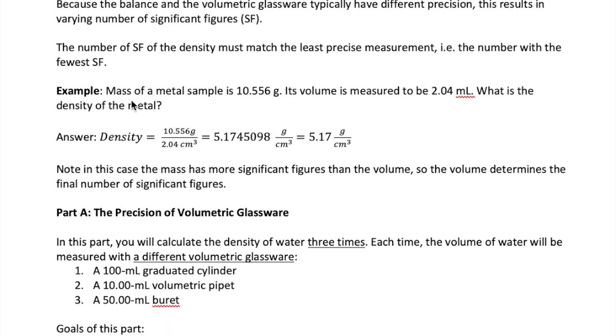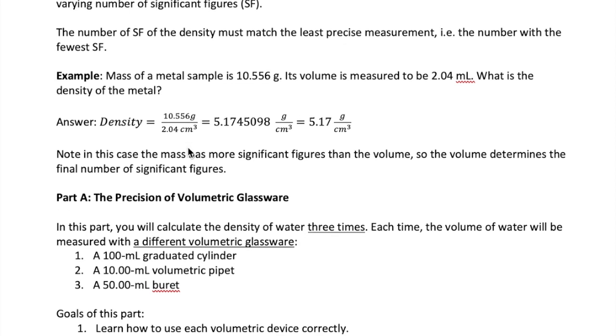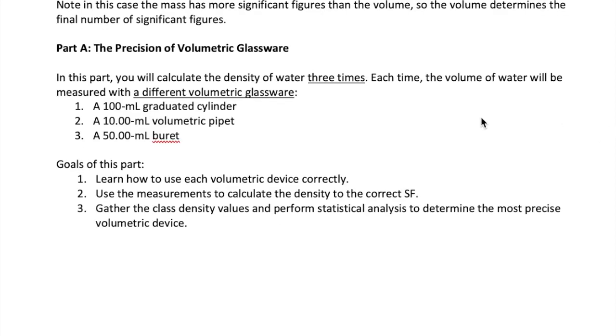So let's apply that idea in this example. We have a metal sample with mass of 10.556 grams and volume of 2.04 milliliters. We can calculate the density by taking the mass divided by the volume. In the calculation, I changed the volume unit to cubic centimeter because we're calculating the density of a solid. The calculated answer has many digits, but the correct answer must only have three significant figures because the instrument that's being used to measure the volume only gives us three significant figures. So the final density must be written as 5.17 grams per cubic centimeter.